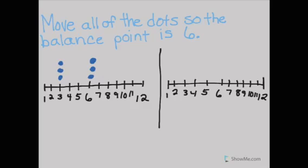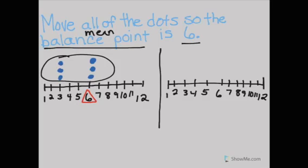Let's look at another example. This one says move all of the dots so the balance point or mean is six. So this right here would be our balance point—that's what we want it to be. Right now it's not, because all of these dots are going to make our scale tip to the left.